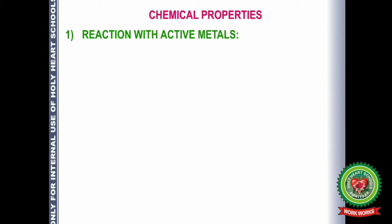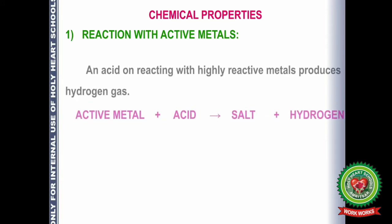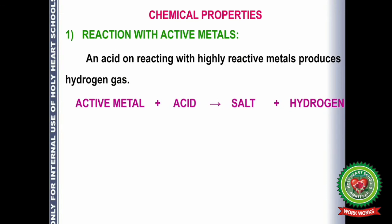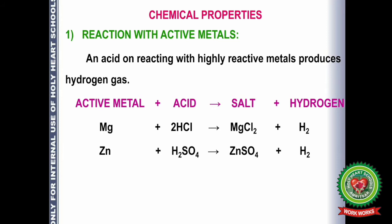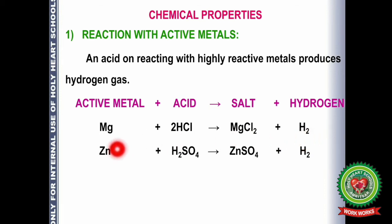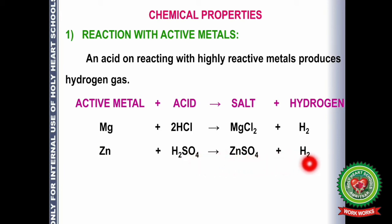The first chemical property is the reaction of acids with active metals. When metals react with an acid, they give salt and hydrogen gas. For example, when magnesium reacts with HCl, it forms MgCl₂ and H₂ gas. When zinc reacts with HCl it forms zinc chloride, and when zinc reacts with sulfuric acid it forms zinc sulfate, both liberating hydrogen gas.